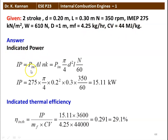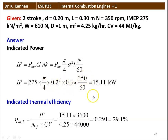The indicated power from the formula: IP equal to IMEP into area of the cylinder into stroke length into N into K, where K is the number of cylinders. Here it is a single cylinder engine, so K equal to 1. IP equal to IMEP into pi by 4 D square into L into N by 60. Substituting: 275 into pi by 4 into 0.2 square into 0.3 into 350 divided by 60 equal to 15.11 kilowatt. Indicated thermal efficiency eta equal to IP divided by mass of fuel into calorific value: 15.11 into 3600 divided by 4.25 into 44000, which is 0.291, equal to 29.1%.